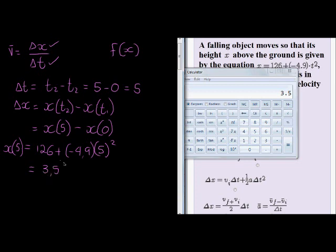3.5. Now what does that mean? This means that this object is falling. We have an object here falling, this is time 0, and it's falling down to the ground. After 5 seconds, that's where we are now. X is the height that it is above the ground, so here's the ground. We calculated that after 5 seconds this height above the ground will be 3.5 meters above the ground.